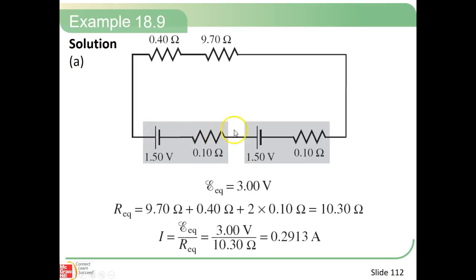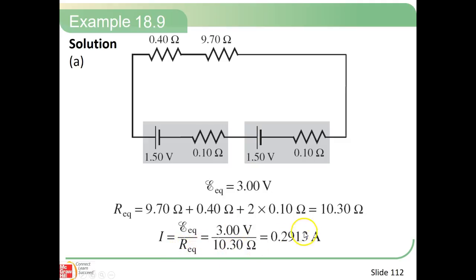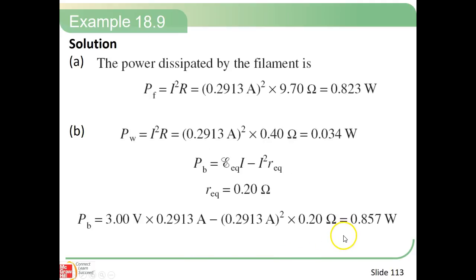First we find the equivalent EMF — adding the two batteries gives 3 volts. The equivalent resistance adds the two internal resistances (2 × 0.10 = 0.20 ohms) plus the wire resistance (0.4 ohms) plus the filament (9.7 ohms), giving a total of 10.3 ohms. Current I equals EMF divided by total resistance: 3 divided by 10.3 gives about 0.2913 amps. For part A, the power dissipated by the filament is (0.2913)² times 9.7 ohms, which equals about 0.823 watts.